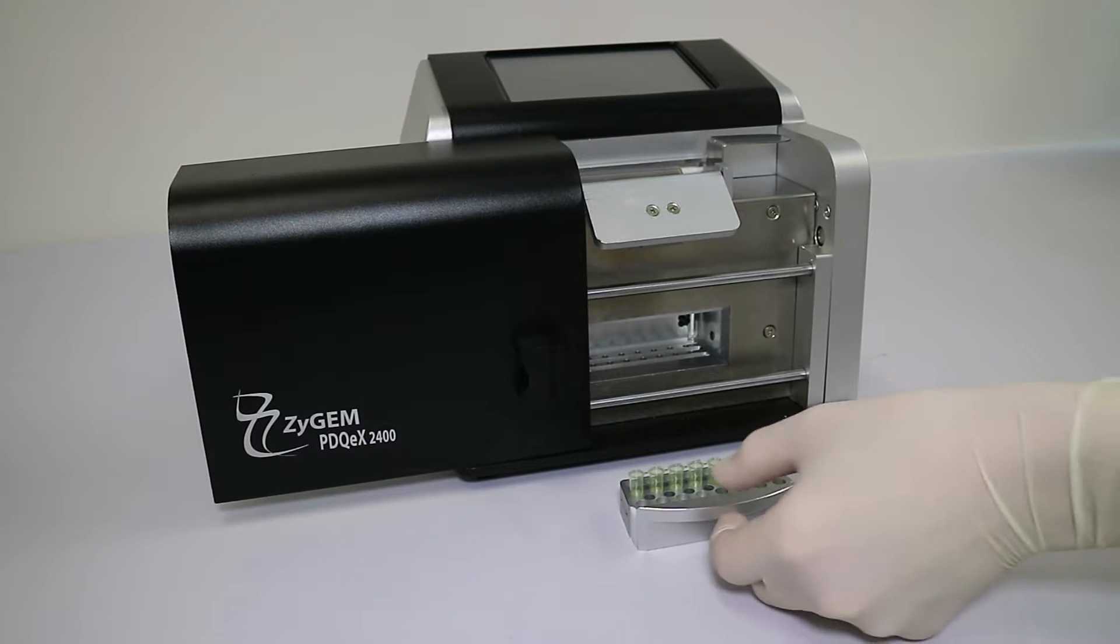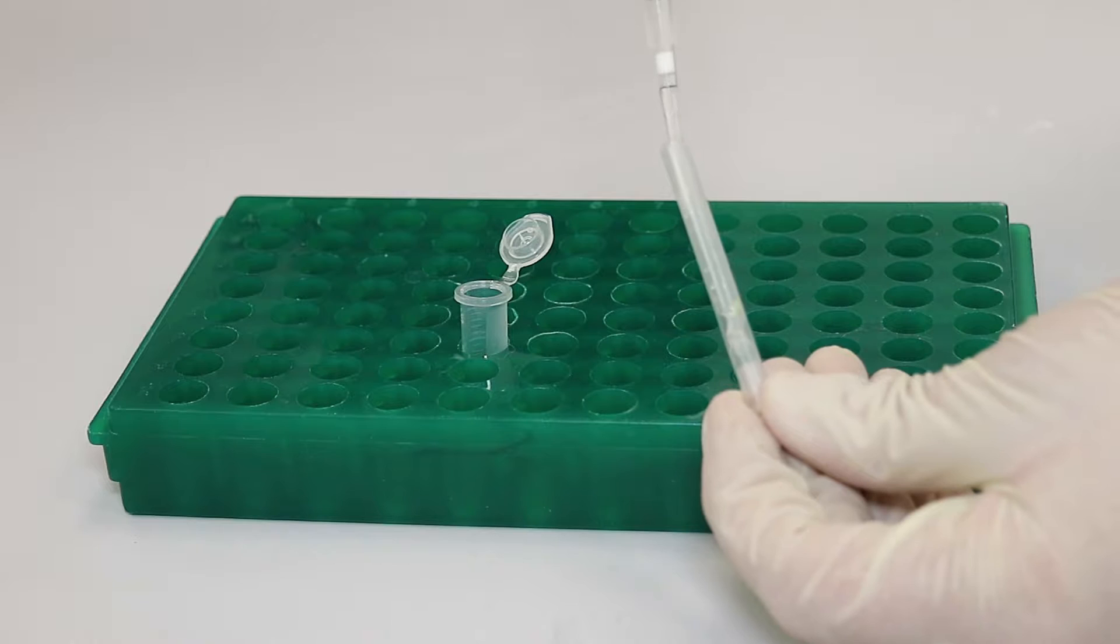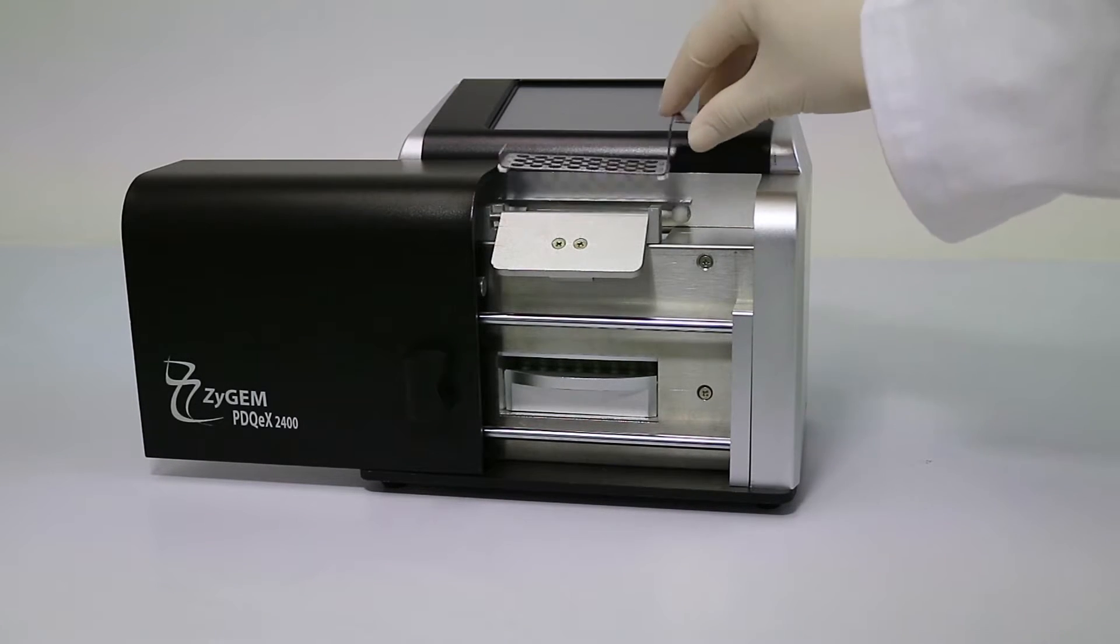Collection tubes or a 24-well tray are placed into the collection drawer. Reagents are added to the tubes. Then the PDQX tubes are loaded into the heat block of the instrument.